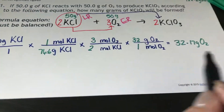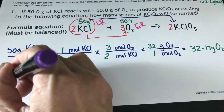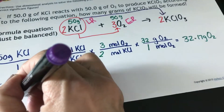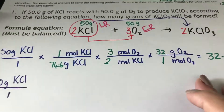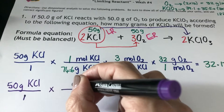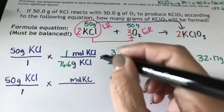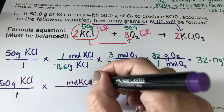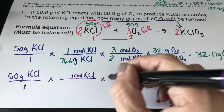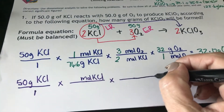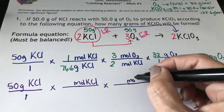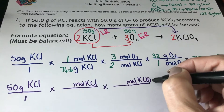We'll do exactly the same type of calculation, but we start with 50 grams of potassium chlorate. For this one we need to know how many moles of potassium chlorate we have — exactly the same as the first half of the previous calculation. Then I would have to find out how many moles of potassium chloride that is going to produce.